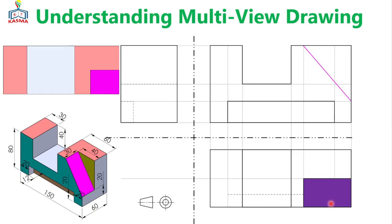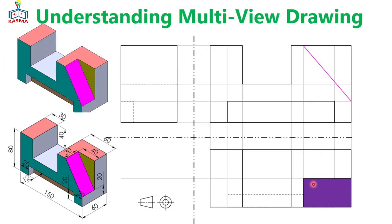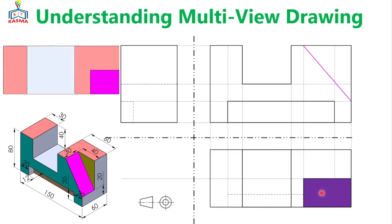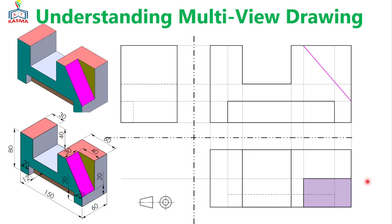When looking from the top view, we are seeing an inverted L-shape. The pink color surface — that means the inclined surface — is changed into a rectangular surface in this way, but it will have a distorted shape and its length will be distorted. Now what will be the view when looking from the right side view?